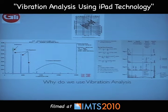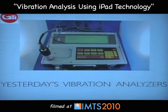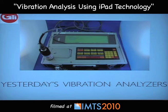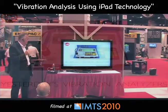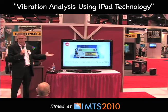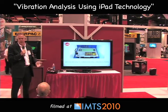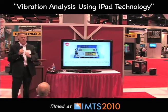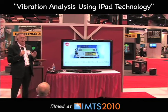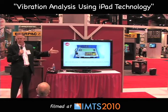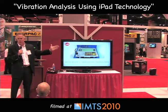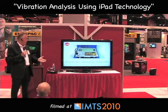Vibration analysis started with yesterday's vibration analyzers — they were very large. They still used what we use today as a common accelerometer. The analyzer was basically wheeled around the plant on a cart, taking vibration points and trending that data so that technicians knew when a particular machine's spindle, motor, or ball screw was going bad and could prepare for it.